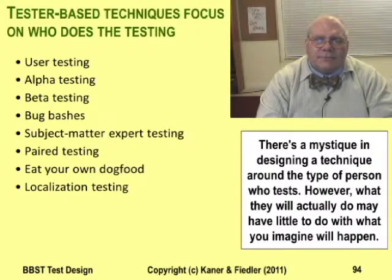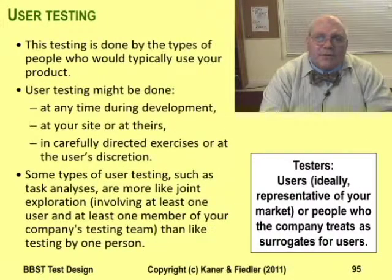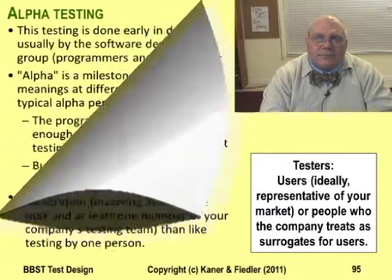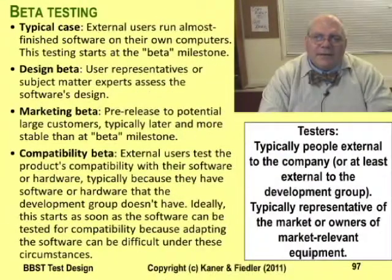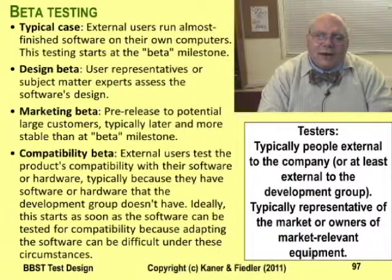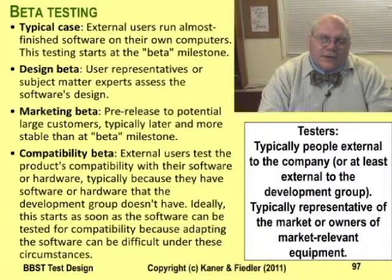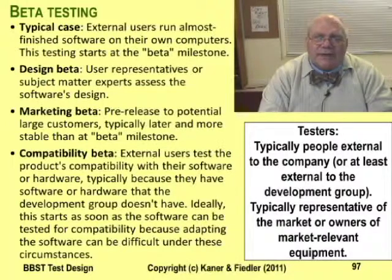Now for the tester-based techniques. User testing is about giving the program to a user to test. Alpha testing is usually done by programmers early in development before anyone else gets to look at the code. Beta testing is typically done by people external to the company. There are different kinds of beta tests with different goals. For example, if you want usable feedback on the product's design, testing has to finish early enough to give developers time to use that feedback to change the design.